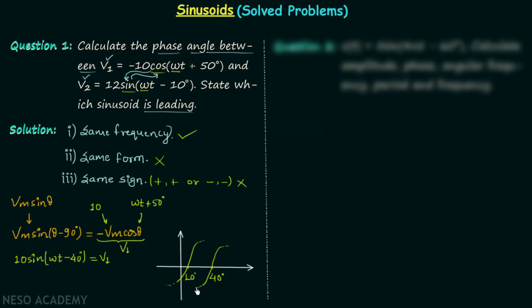On comparison, there is a phase difference of 40° minus 10°, which is 30 degrees. This is the plot of V2 and this is the plot of V1. V2 is leading V1 by 30 degrees.